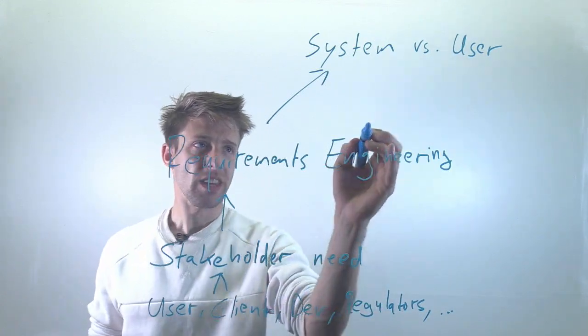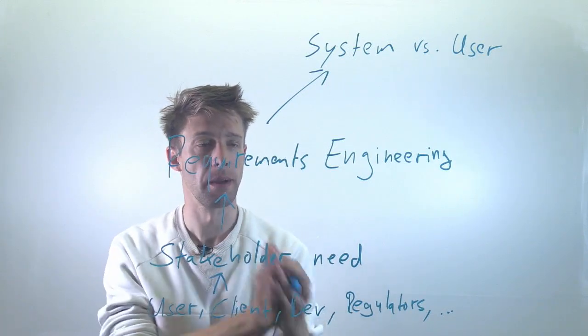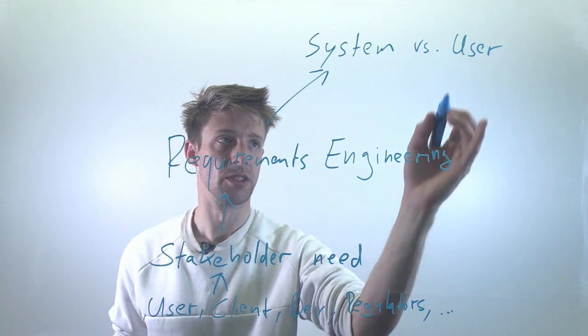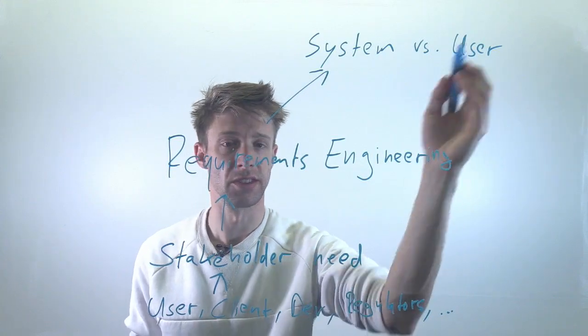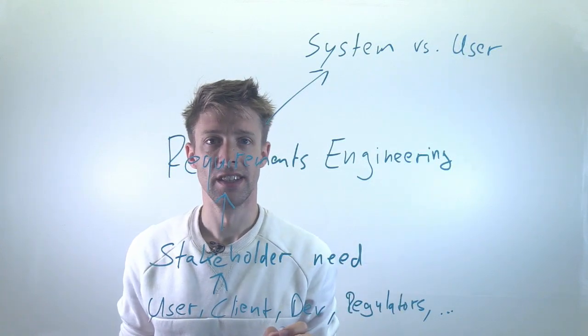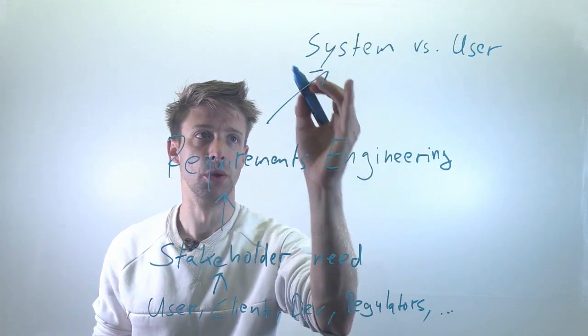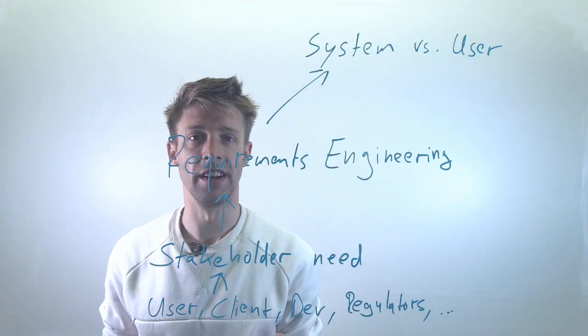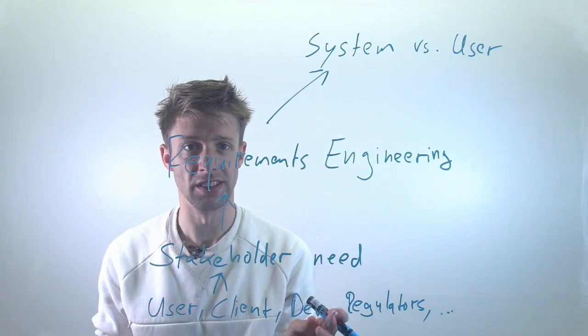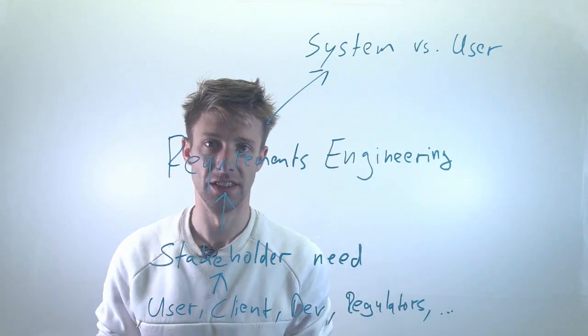In the old world, where you did software development step by step in a plan-driven way, usually the client would come with a so-called user requirement specification which just described on a very high level what is it we would like the software to do for us, what would we like to do with it. Then the contractor, whoever develops the system, would write a system requirement specification and would say, okay, this is what the system overall will do, and ideally this specification matches this functionality.